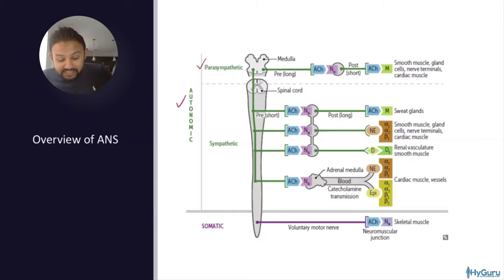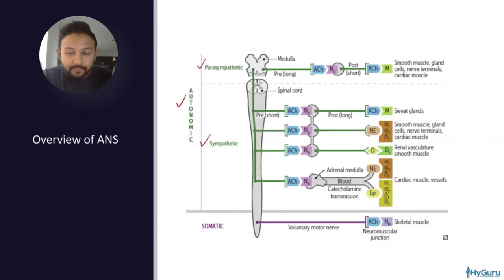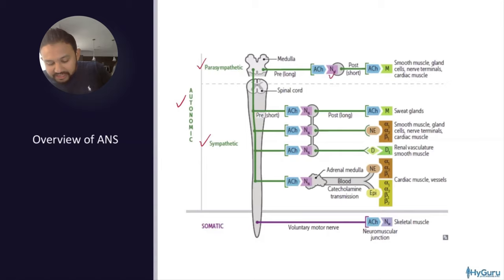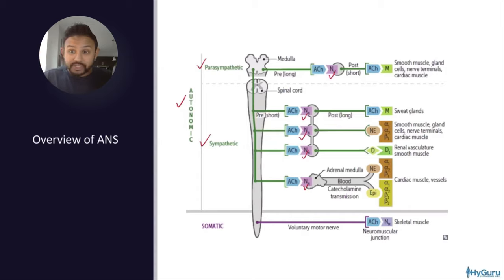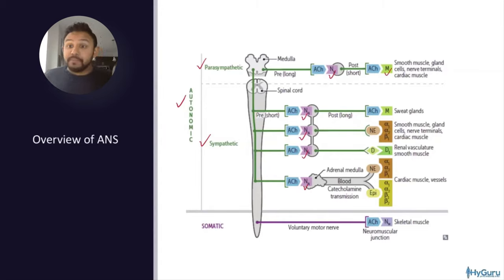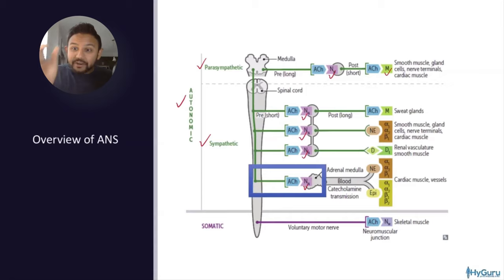The autonomic nervous system has parasympathetic and sympathetic divisions. What is very testable is that at the interganglion synapse you have an acetylcholine receptor — a nicotinic acetylcholine receptor. Nicotinic acetylcholine receptors are ion channels, whereas muscarinic acetylcholine receptors are G-protein coupled receptors. At the adrenal medulla you also have a nicotinic acetylcholine receptor — just like an interganglion synapse.